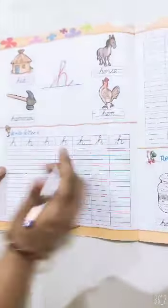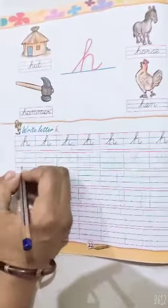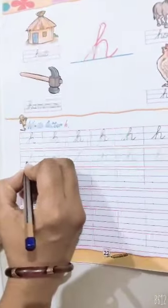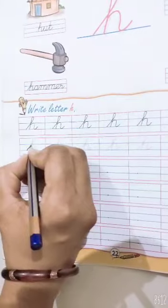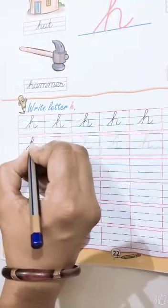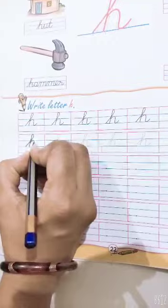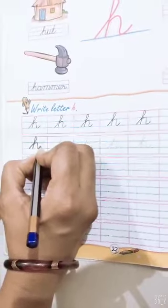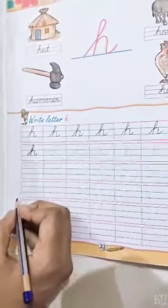Now see. Start writing. See. Slowly you have to do. This is H.